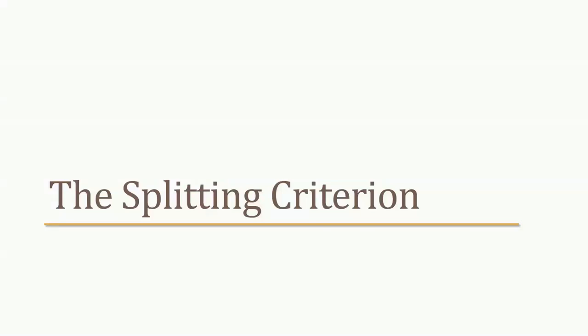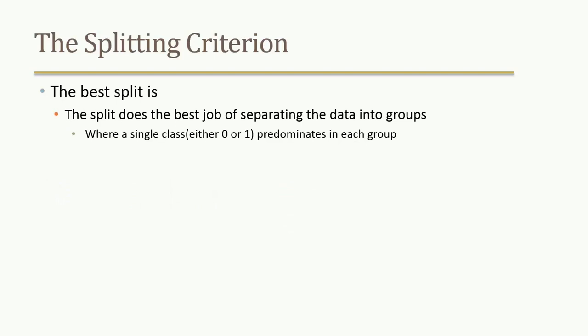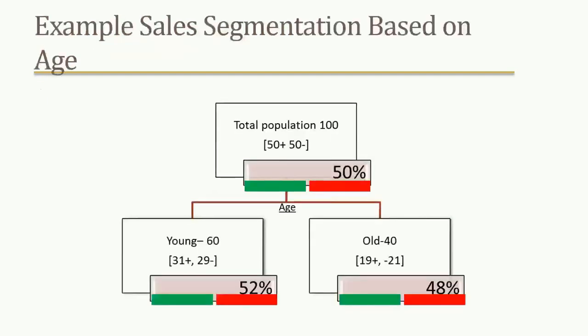What is a splitting criterion? The best split is the split that does the best job of separating data points into groups, where each group has a very dominant single class. When we say the splitting is really good or the best split, the groups resulting from splitting should have purity — one group dominating really high.